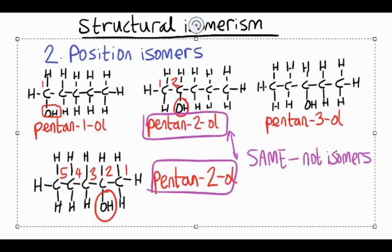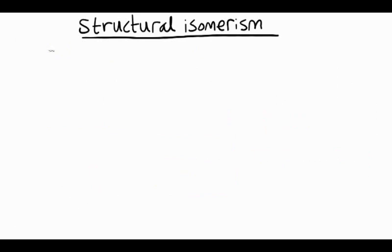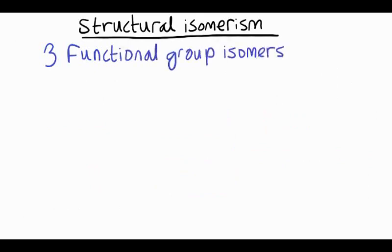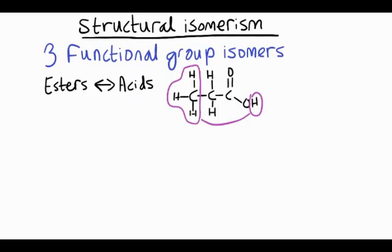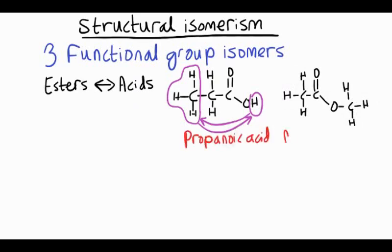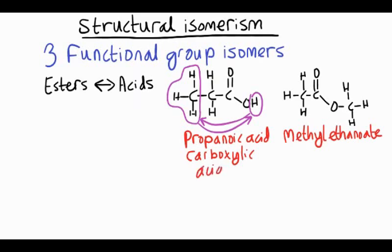The third type of isomerism is called functional group isomerism. This is where we change the structure of our molecule and end up with a different functional group. Remember, these aren't real chemical reactions — we're just talking about structural relationships between molecules. Take propanoic acid for example: that's a functional group isomer of an ester. If we swap the CH3 for the H, we make a molecule that is an ester. The carboxylic acid is called propanoic acid, and the ester is called methyl ethanoate. So by moving atoms around, we've gone from a carboxylic acid to an ester.